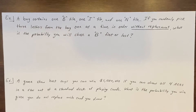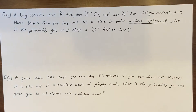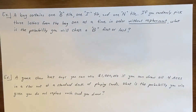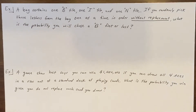Example one: a bag contains one B tile, one I tile, and one N tile. If you randomly pick three letters from the bag one at a time in order without replacement, what is the probability you will choose a B first or last? A key thing to note is 'without replacement' — when you draw a tile, you do not put it back in the bag. With replacement means you draw, look at it, and put it back. This determines the possible outcomes.